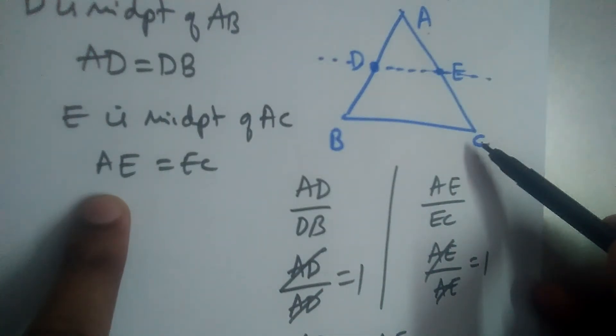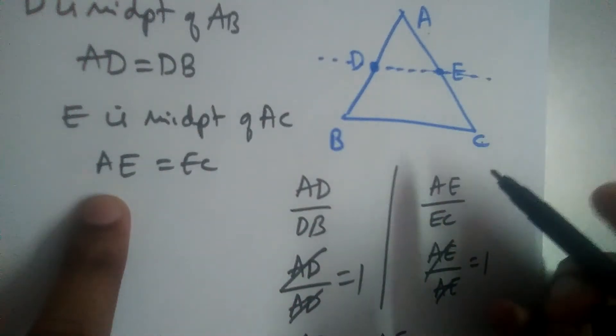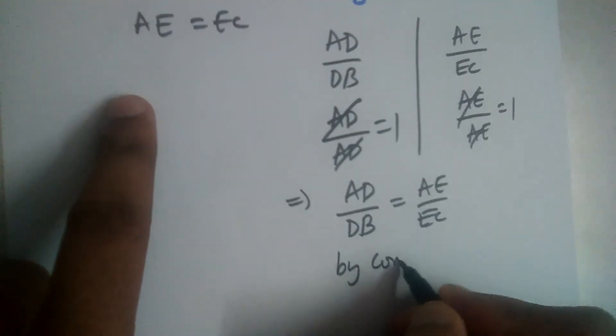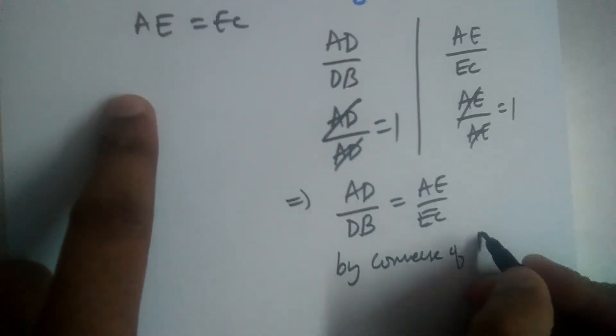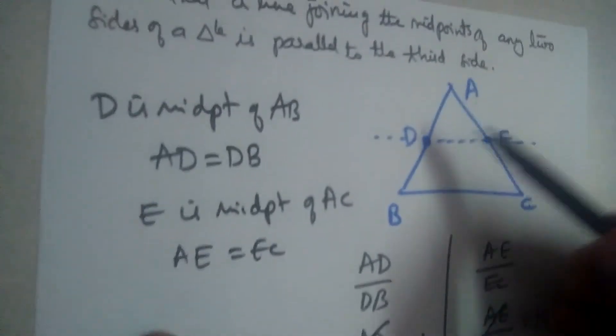When will it happen? It will happen only if DE is parallel to BC, right? By converse of BPT. By converse of basic proportionality theorem we can say that DE is parallel to BC.